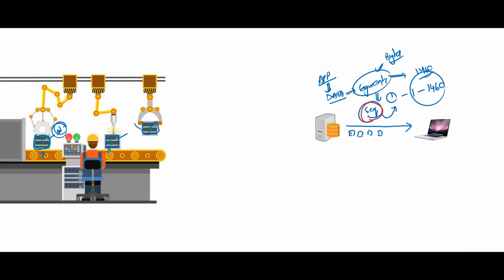The sequence number keeps track of each byte that has been sent over the network to the receiver. Sequence number is compared to a serial number, which helps identify and track individual components in a large process. Similarly, the sequence number is used to track each byte sent from each direction, since TCP is full duplex — both ends send data to each other simultaneously.